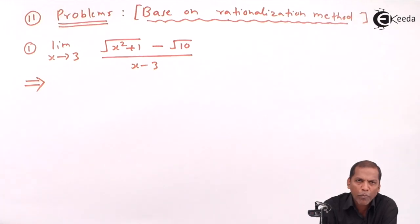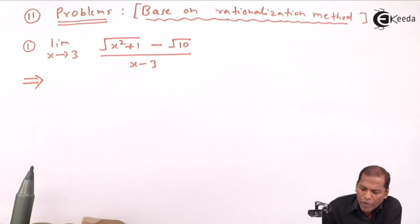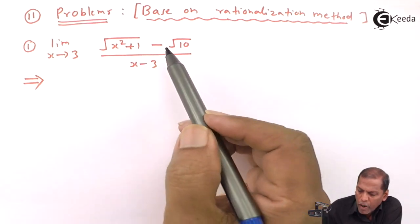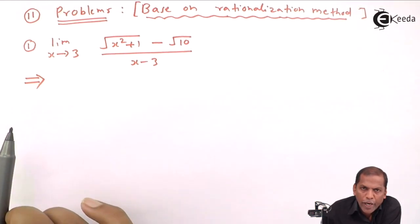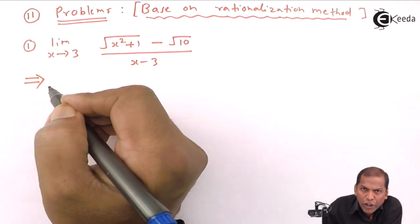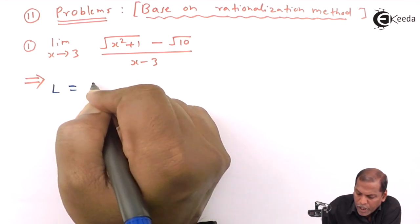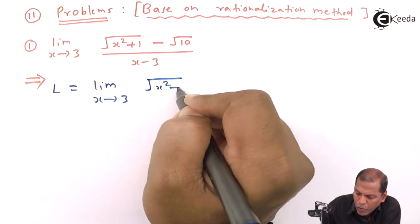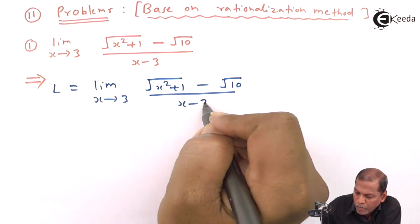Hello friends. Now we see subtopic 11, which includes problems based on the rationalization method of the chapter on limits. Problem number one: limit x tends to 3 of square root of x squared plus 1 minus square root of 10, all divided by x minus 3. Now let's see the solution. We denote the given limit by L, so L is equal to limit x tends to 3 of square root of x squared plus 1 minus square root of 10 upon x minus 3.